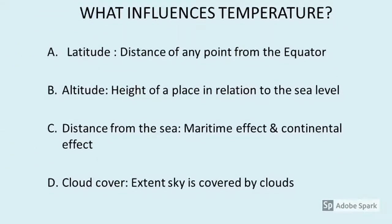We have now come to the end of the section on what influences temperature. Your four key influences of temperature are: firstly, latitude — the further away from the equator, the lower the temperature generally; secondly, altitude — the higher you go, the colder it is, with the golden formula of approximately 6.5 degrees drop per 1,000 meters increase; thirdly, distance from the sea — with the maritime effect and continental effect; and fourthly, cloud cover.